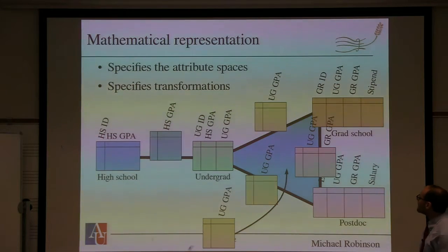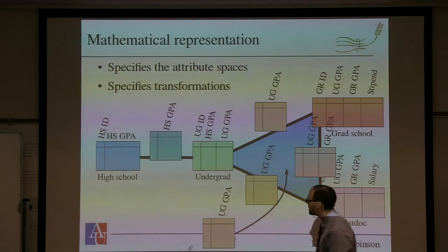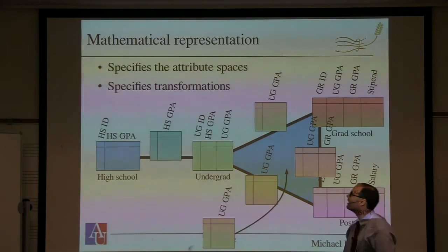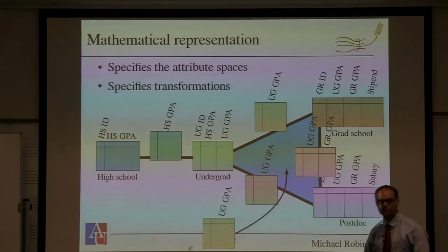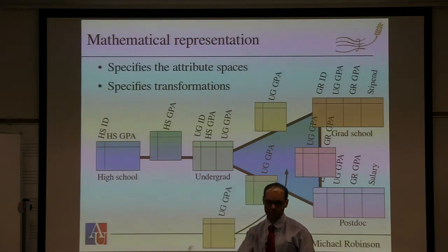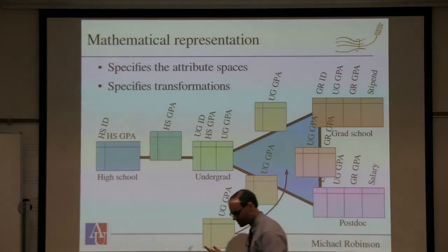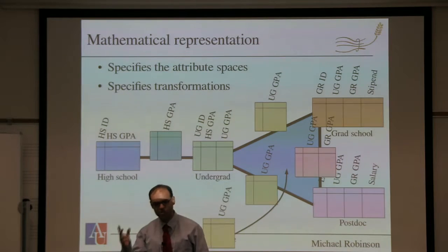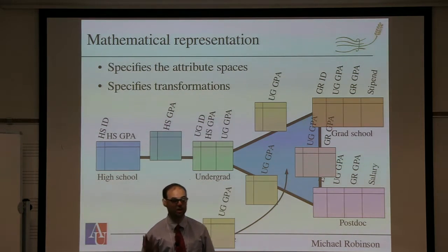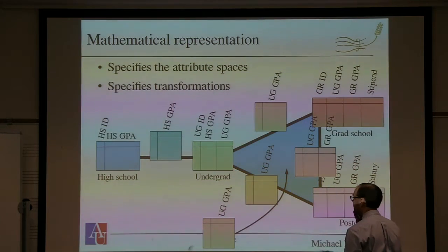Mathematically, what I'm really after is not so much the specific numbers, but the tables and how they're transformed to one another — the spaces of data and how they're transformed. What I've specified axiomatically is: I'd like to have data sources; those data sources have attributes; those data sources are related based on shared attributes; I can transform them together and start doing joins when I have consistency.